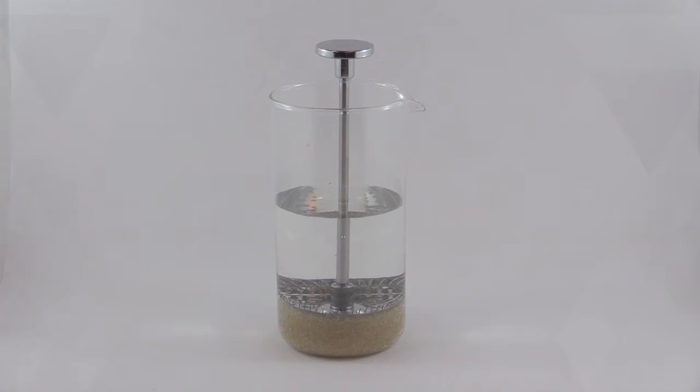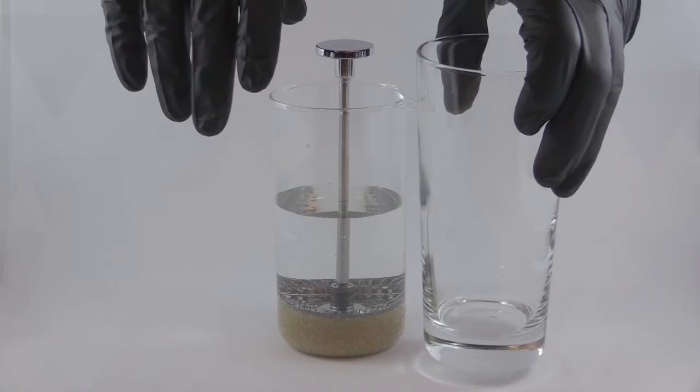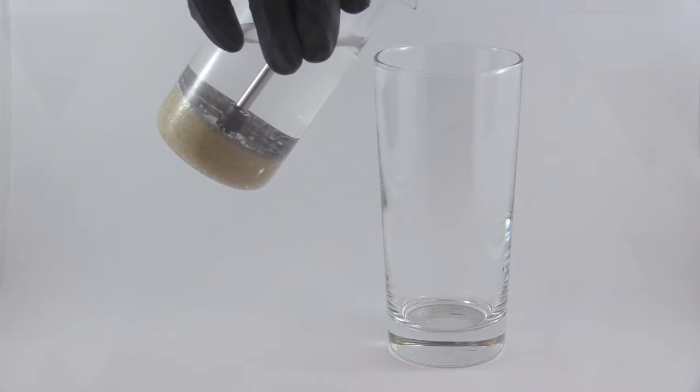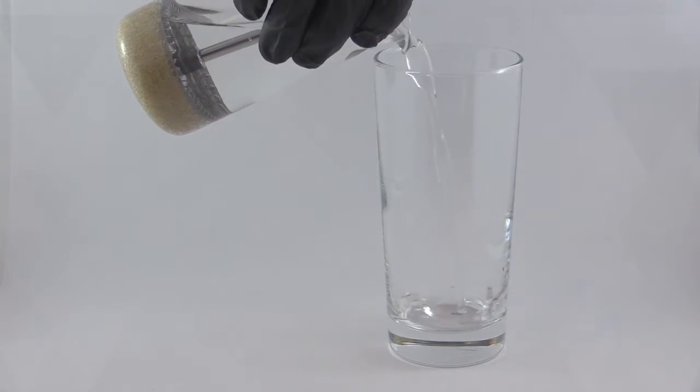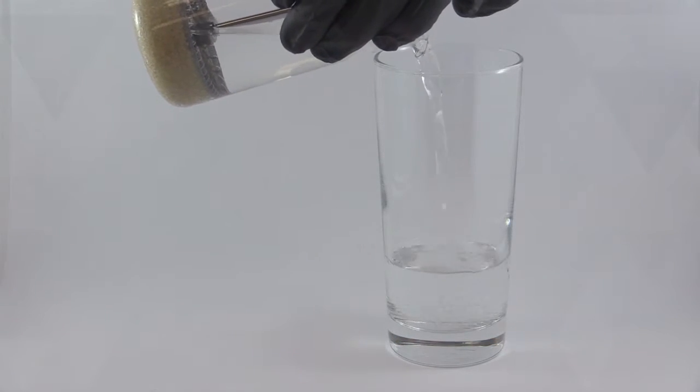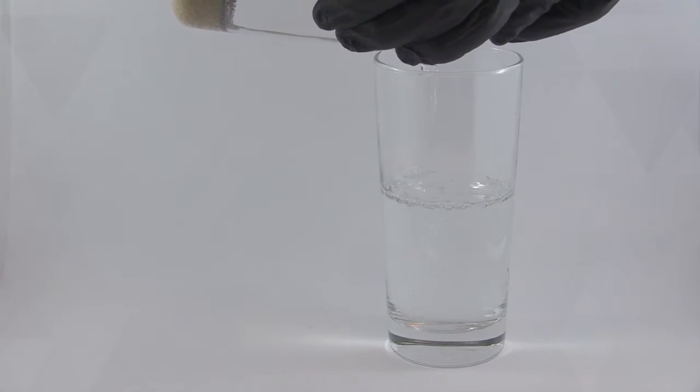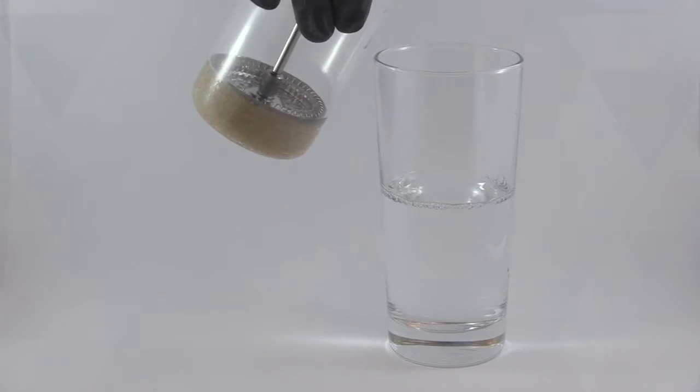Other proppant modifying systems achieve transport by creating a high viscosity coating around the proppant grain. This can later create gel residue damage in the proppant pack and the reservoir. As you can see, there is no increase in fluid viscosity and there is no gel to damage the reservoir or proppant pack.